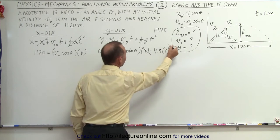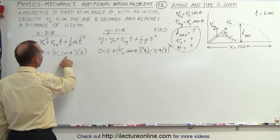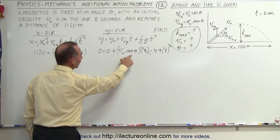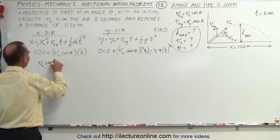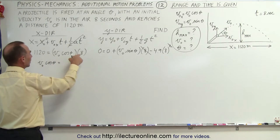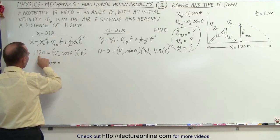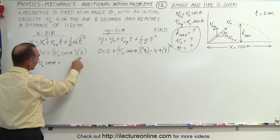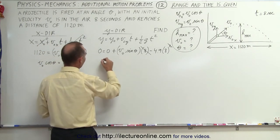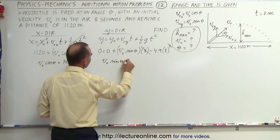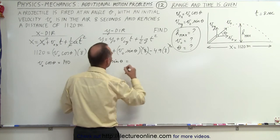That means this and this will reduce. And now we can solve this equation for v initial times the cosine of theta and this equation for v initial times the sine of theta. So here we get v initial times the cosine of theta is equal to 1120 divided by eight, which is 140. And over here, v initial times the sine of theta is equal to 8 times 4.9, which is 39.2.